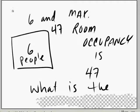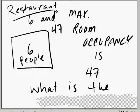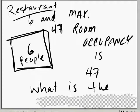Let's say you are working in a restaurant, and there are six people in the room, and the room has a maximum occupancy of 47.